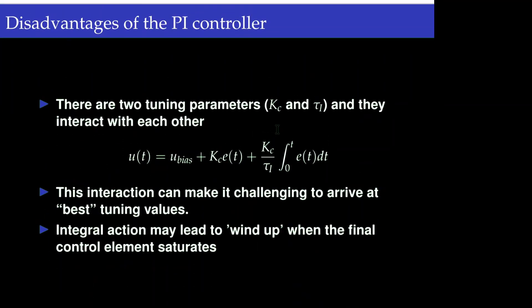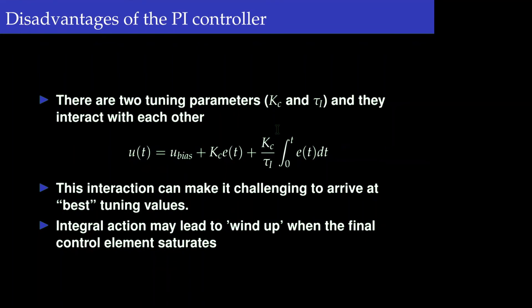There is another issue: we now have two parameters, Kc and tau_i, and finding the best tuning values for both is a challenge. Another problem with the integral action is what is called integral windup, which is caused by the saturation of the final control element.